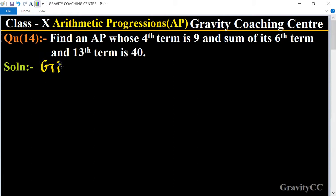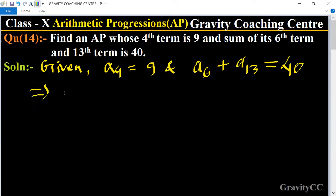Given the fourth term a₄ = 9 and the sum of sixth term plus 13th term equals 40. So now we expand it: a₄ means a + 3d = 9, which is the first equation.